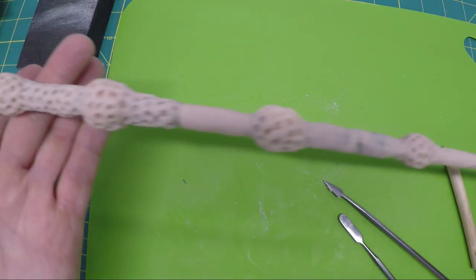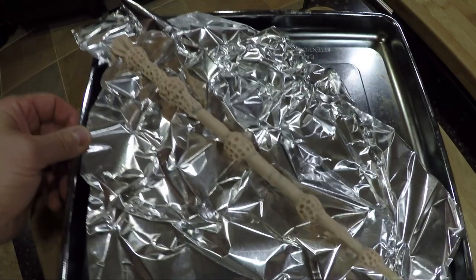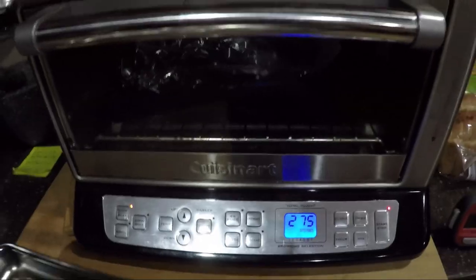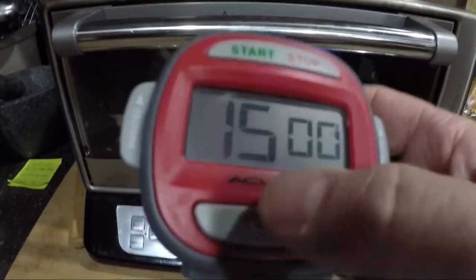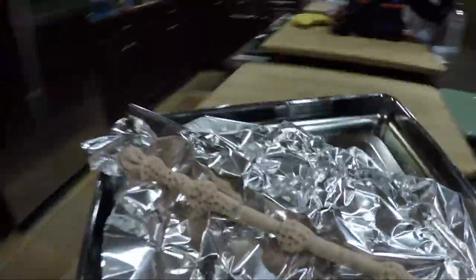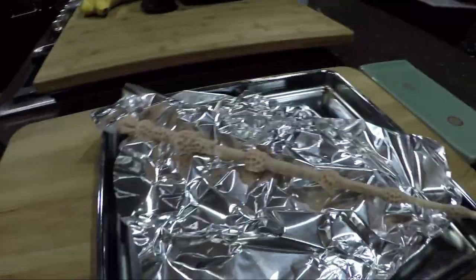I'm going to touch up all the divots and then put it in the oven and bake it. The elder wand is ready to put into the oven. The oven's at 275 and it's time to bake the wand. Set the timer for 15 minutes. One cooked elder wand. Sit there and let it cool.